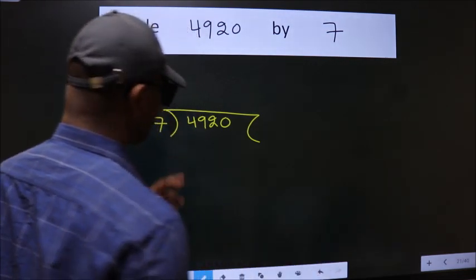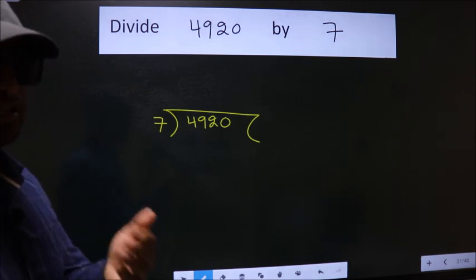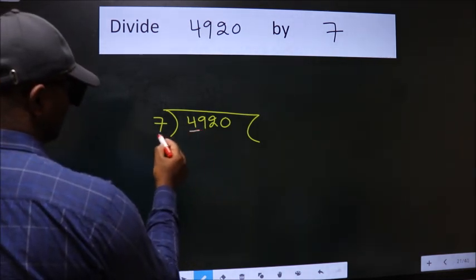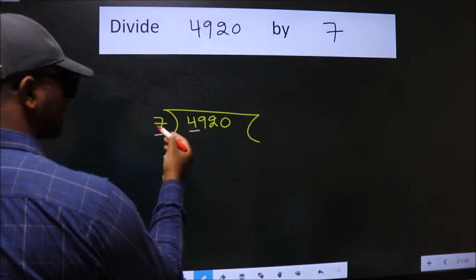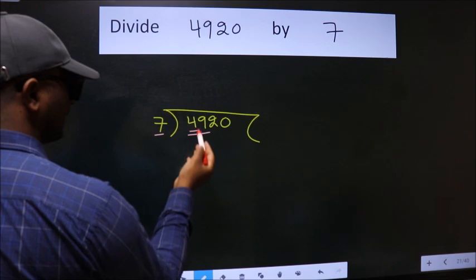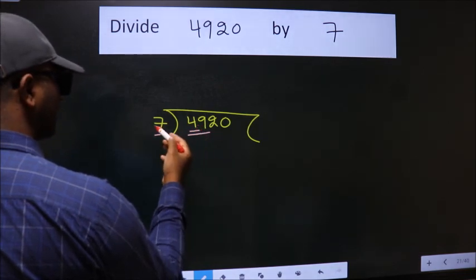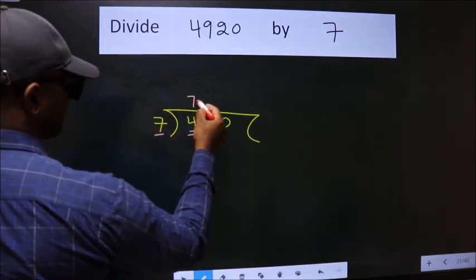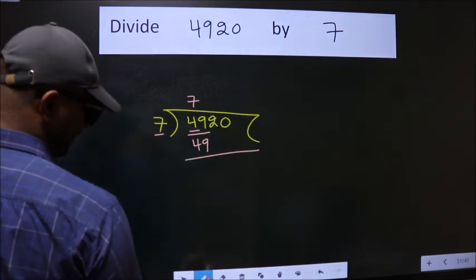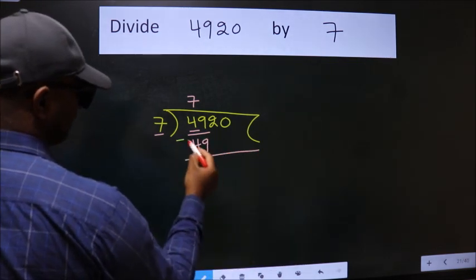This is your step 1. Next, here we have 4. Here 7. 4 is smaller than 7. So, we should take two numbers 49. When do we get 49 in 7 table? 7 7s 49. Now, we should subtract. We get 0.